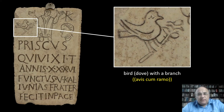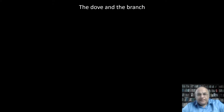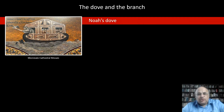The bird with a branch is also a common motif on Christian epitaphs. Its transcription in double round brackets is Avis cum Ramo. If we carefully look at these pictures, we can see that the bird sometimes keeps the branch in its beak, and sometimes it stands on a branch. The branch is most probably an olive bough, consequently the bird cannot be other than a dove or a pigeon. The next question is what is the message of the dove and the olive branch? Naturally, it refers to the holy scriptures, which mention at two crucial points of the narrative the dove and the olive bough.